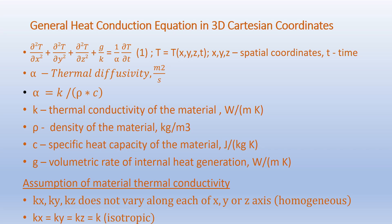Alpha equals K over ρC. K is the thermal conductivity of the material in watts per meter Kelvin. Rho (ρ) is the density of the material in kilograms per meter cubed. C is the specific heat capacity of the material in joules per kilogram Kelvin. G is the volumetric rate of internal heat generation given in watts per meter cubed, and this is the source term.